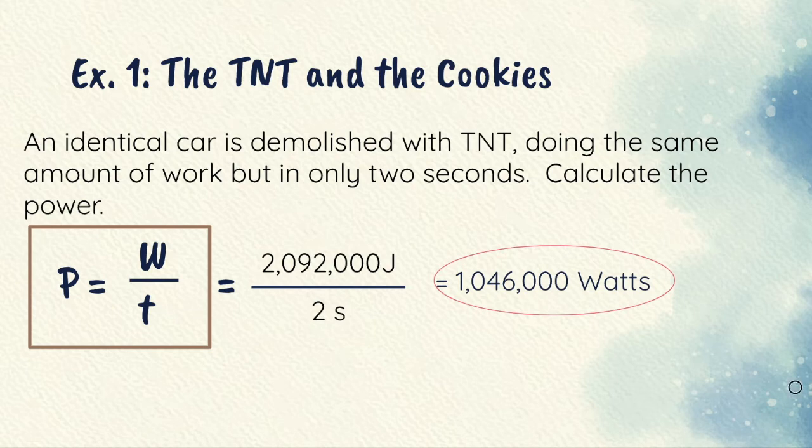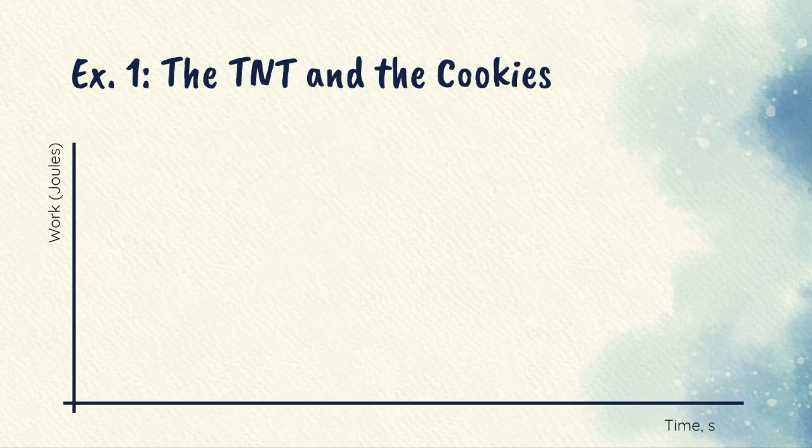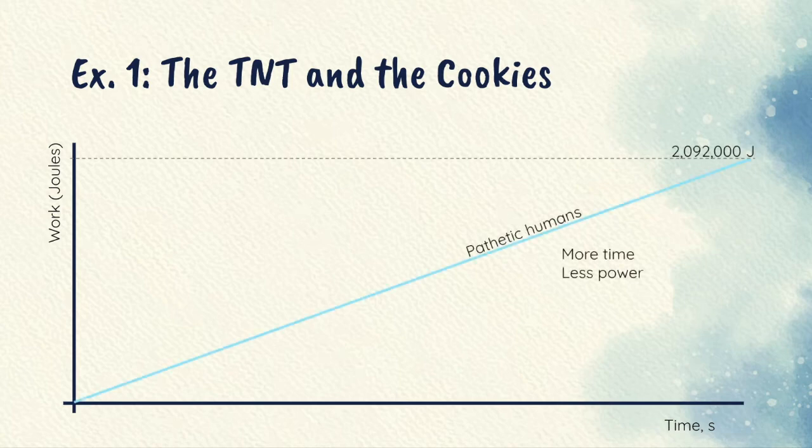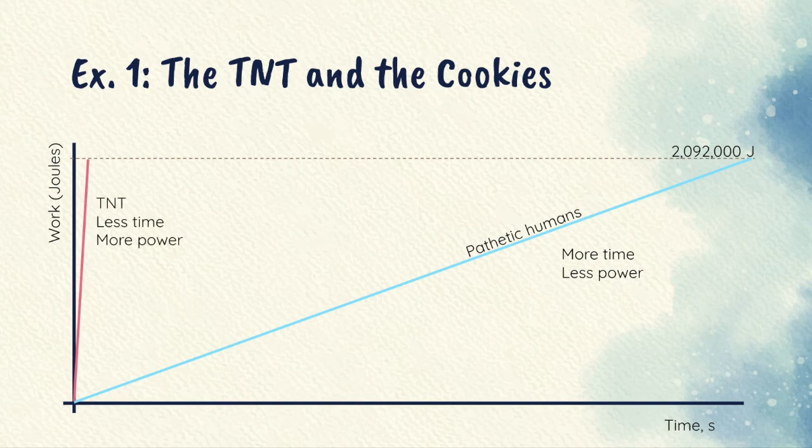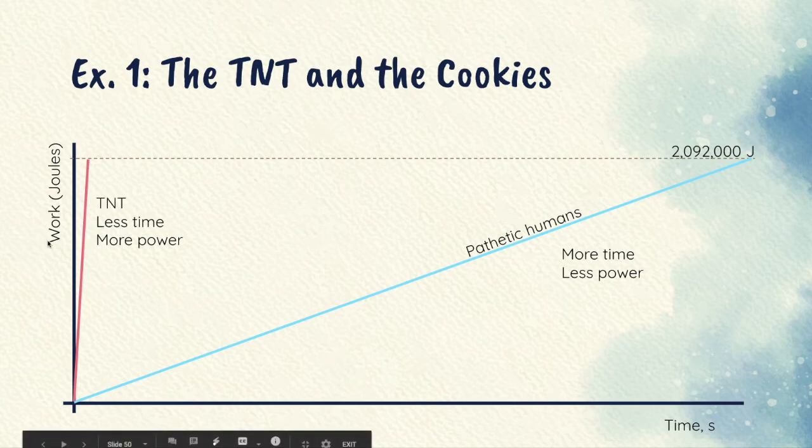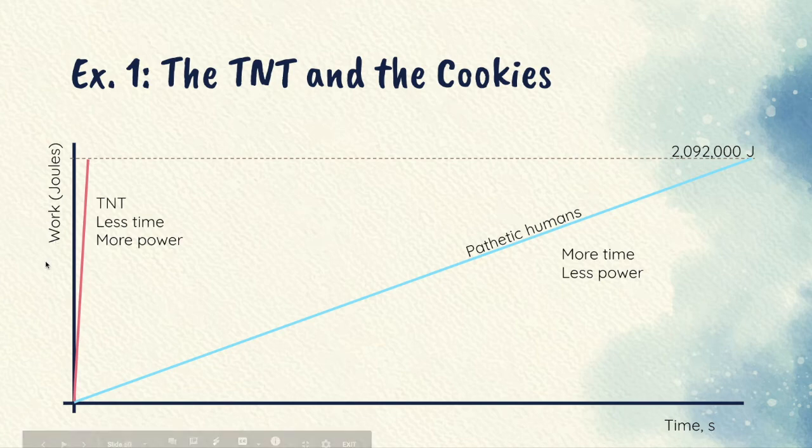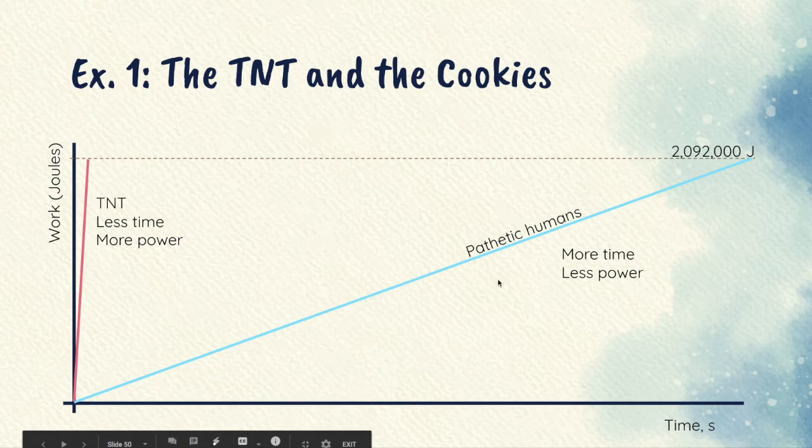One way that we depict power sometimes is by doing a graph of work versus time. So my lazy, pathetic humans do 2,000,000 joules of work, and it takes them 15 minutes to do so. They do less power, more time, but it's the same amount of work. It's the same amount of work as TNT that put out more power, so accomplished the same amount of work and less time. This graph you might see with work on the y-axis. You may also see this with kinetic energy. You could see it with gravitational potential energy. Any sort of work or energy can go on this axis because work and energy are related to each other. In either case, notice that more power gives a steeper slope and less power gives a shallower slope.